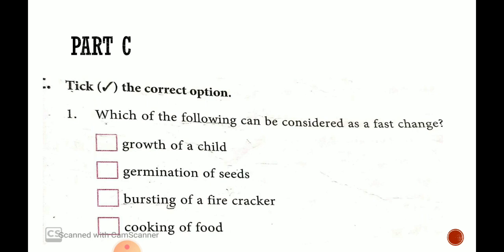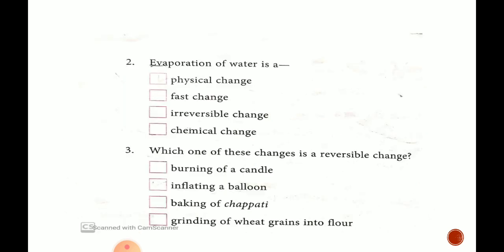That is Part C. Tick the correct option. First, which of the following can be considered as a fast change? Growth of a child, bohut dheerhe hoti hai. Germination of seeds, woh bhi kaafi din, hafte, mahine lag jate hai. Bursting of a cracker. Yes. Yeh fata fata hota hai. Jaise hum aag lagayenge aur cracker fata jayega, burst ho jayega. So it is fast change. Then cooking of food also takes time. So out of these the right answer is bursting of a fire cracker.